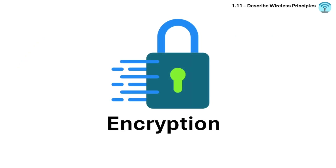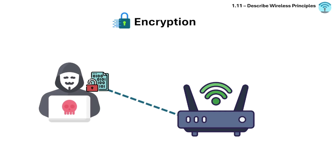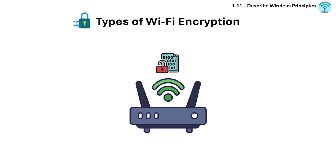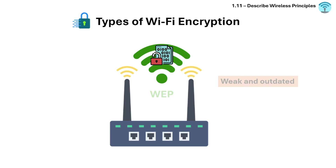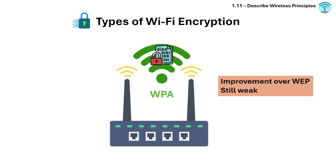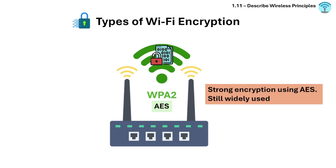Last in this section is encryption. Encryption secures wireless communication from unauthorized access. The types of Wi-Fi encryption are: WEP (Wired Equivalent Privacy) — weak and outdated, avoid using it. WPA (Wi-Fi Protected Access) — an improvement over WEP but still weak by today's standards. WPA2 — uses strong encryption with AES (Advanced Encryption Standard) and is still widely used.